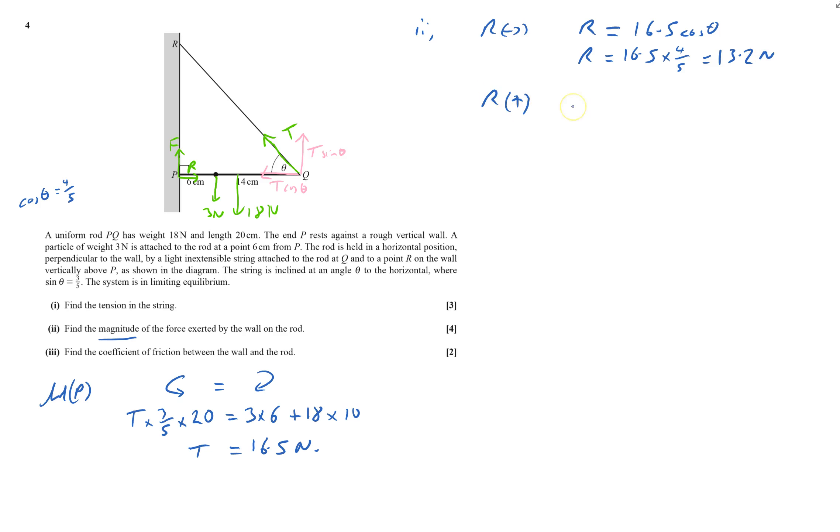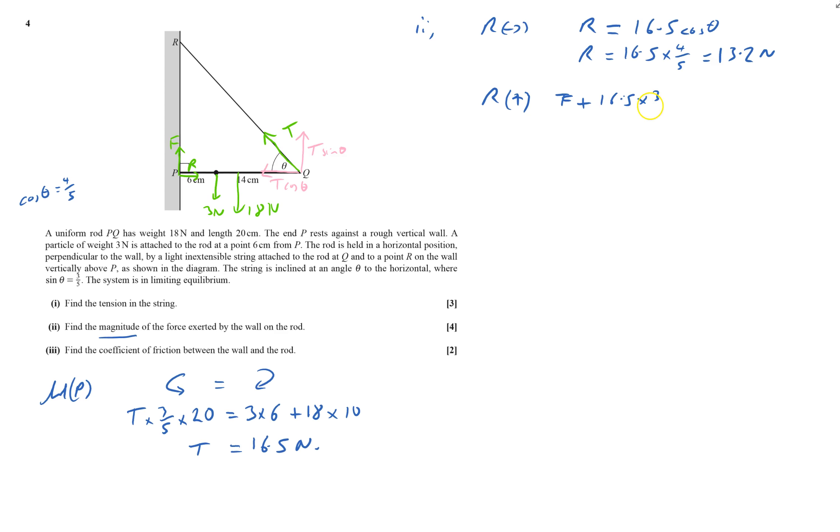Then I'm going to resolve upwards. F goes upwards, it's going to be F plus this T sin theta, so that will be 16.5 times by sin theta, which is three-fifths.